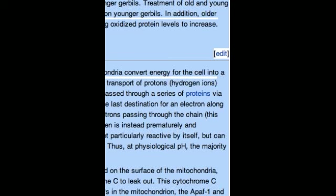In normal conditions, the oxygen is reduced to produce water. However, in about 0.1-2% of electrons passing through the chain (this number derives from studies in isolated mitochondria, though the exact rate in live organisms is yet to be fully agreed upon), oxygen is instead prematurely and incompletely reduced to give the superoxide radical O2-, most well documented for complex I and complex III.